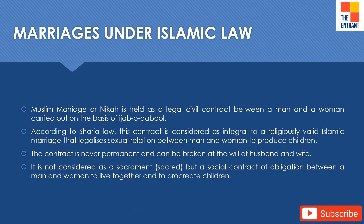Muslim marriage or nikah is held as a legal civil contract between a man and a woman carried out on the basis of ijab or qabul. Ijab is the proposal from one party and qabul is the acceptance from the other. According to Sharia law, this contract is considered integral to a religiously valid Islamic marriage that legalizes sexual relationship between the man and the woman to produce children. The contract is never permanent and can be broken at the will of the husband and wife. It is not considered to be a sacrament but a social contract of obligation between a man and woman to live together and to procreate children.